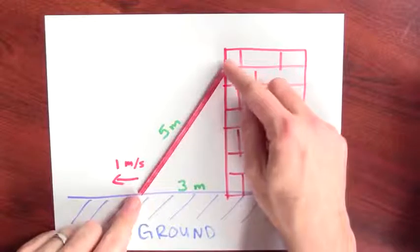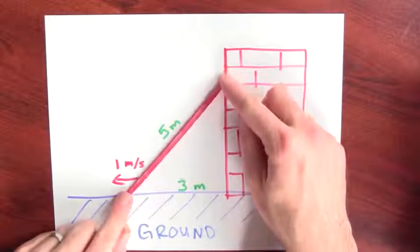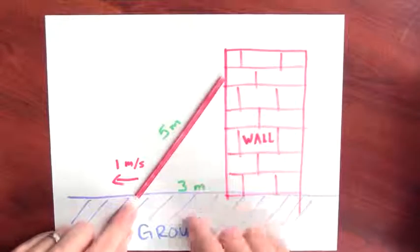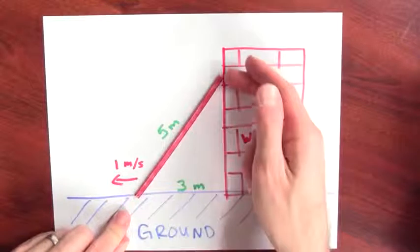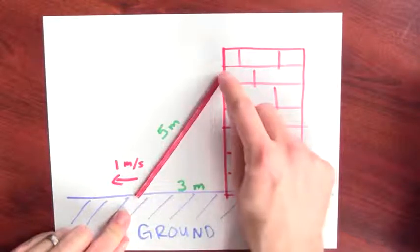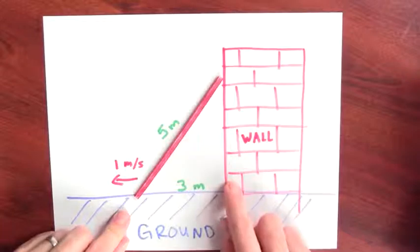Just as I do this, how fast does the top of the ladder start moving down the side of the wall? That's the question. I'm moving the bottom of the ladder, the ladder is sliding down the wall. How fast is this side moving down the wall?